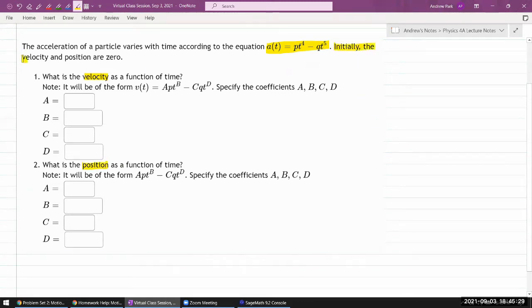And they give you an important information. Here it says initially the velocity and position are zero. What they are saying is the velocity at time equals zero - that's what most reasonable people will say what initially should mean is equal to zero. And position at time equals zero is also equal to zero.